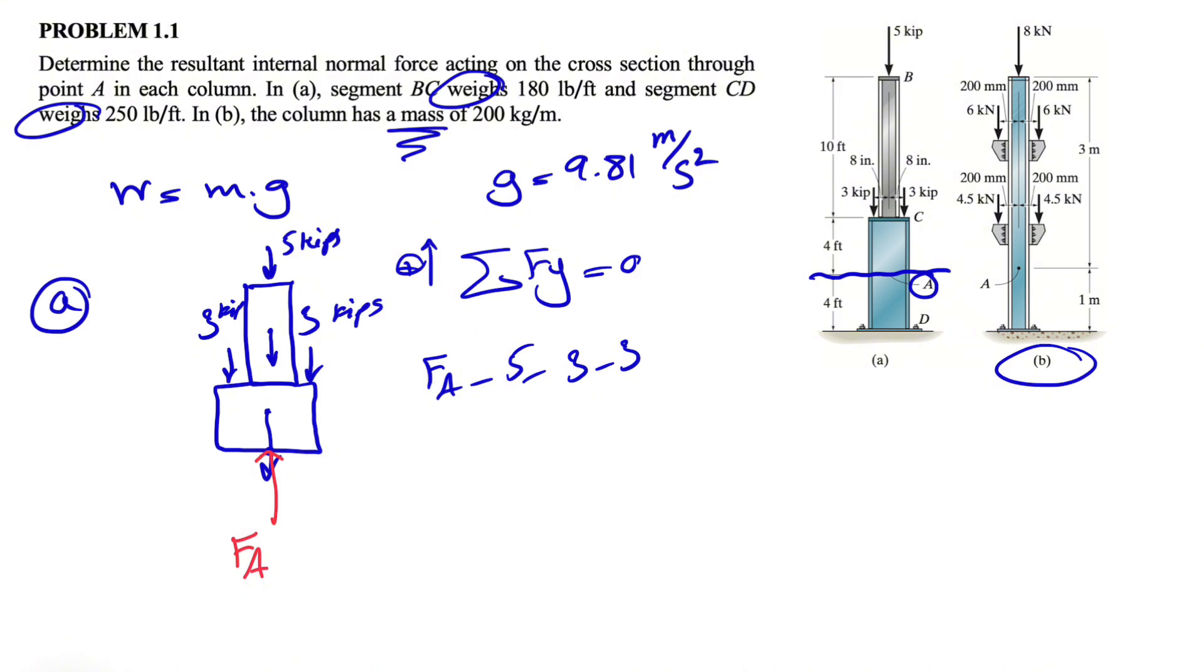And we have to figure out the weight of each member. For member BC, we know it has a weight of 180 pounds per foot. So we have minus 180 pounds per foot. Since all other units are in kips, we have to do a unit conversion and get rid of foot too. So we need kips and pound.